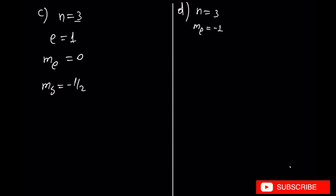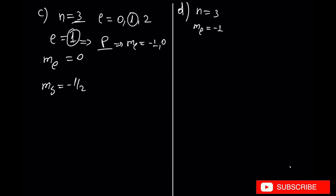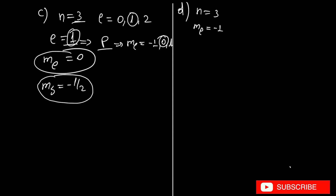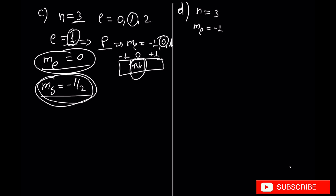Let's move to another example: n equal to 3, so l is going to be 0, 1, and 2. L equal to 1 is valid for n equal to 3, and it represents p orbitals, which has ML equal to minus 1, 0, and 1 — so ML equal to 0 is included. The set also has ms equal to minus 1/2. p orbitals have three atomic orbitals: ML minus 1, 0, and plus 1. So ML is 0 and ms is minus 1/2, which means only one electron is in this orbital, since ms equal to minus 1/2 specifies only one electron. So one electron is possible in this set of quantum numbers.